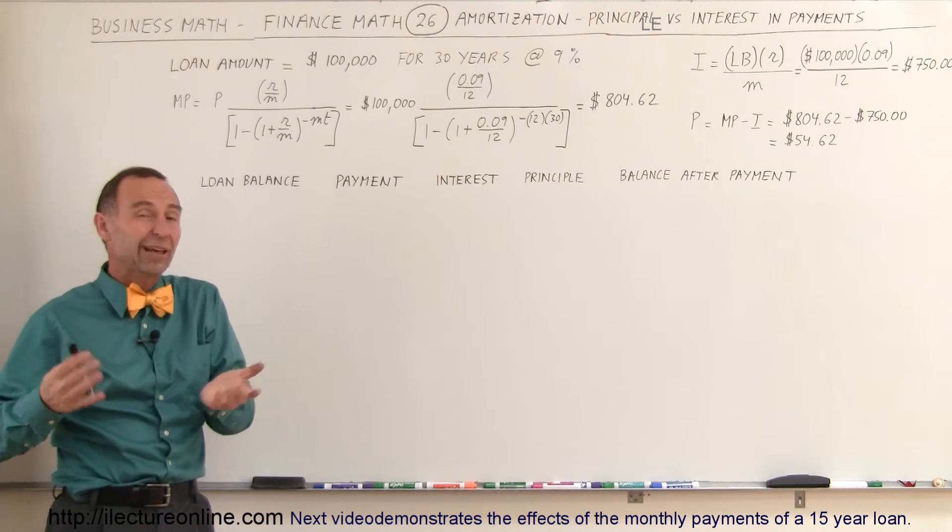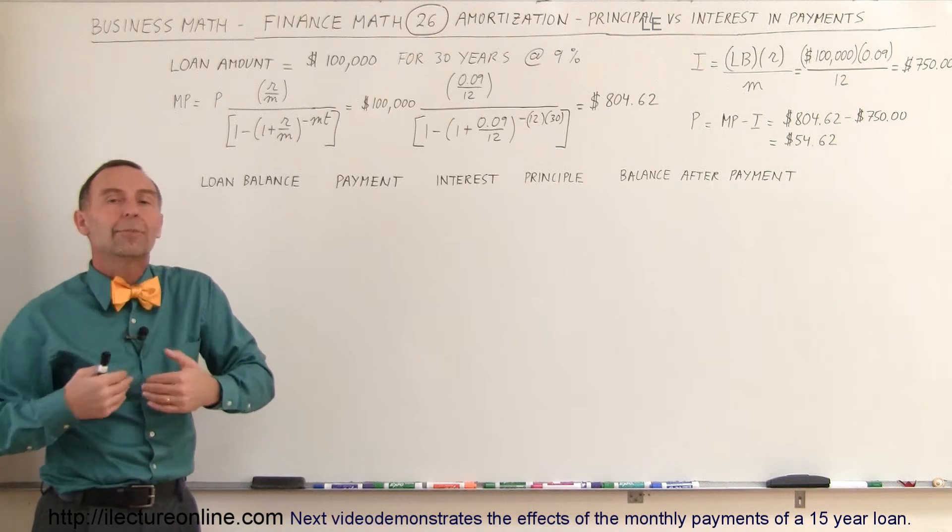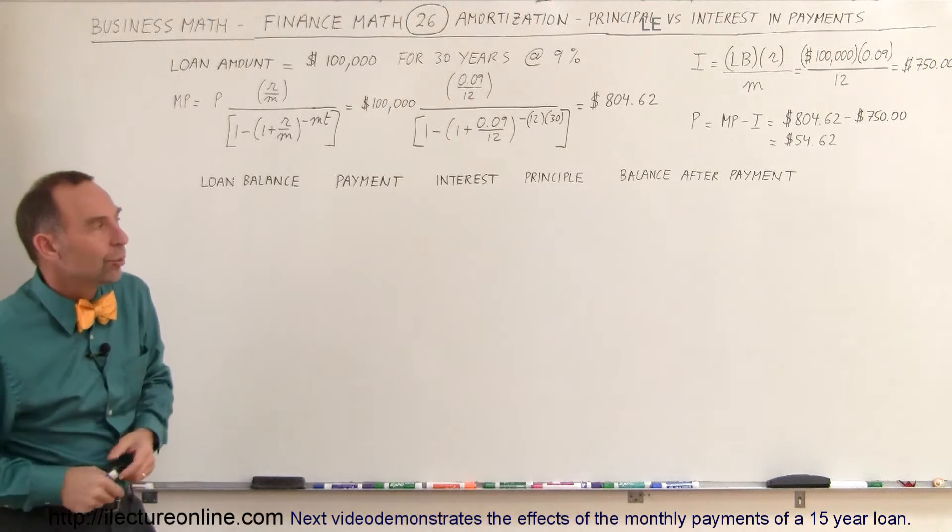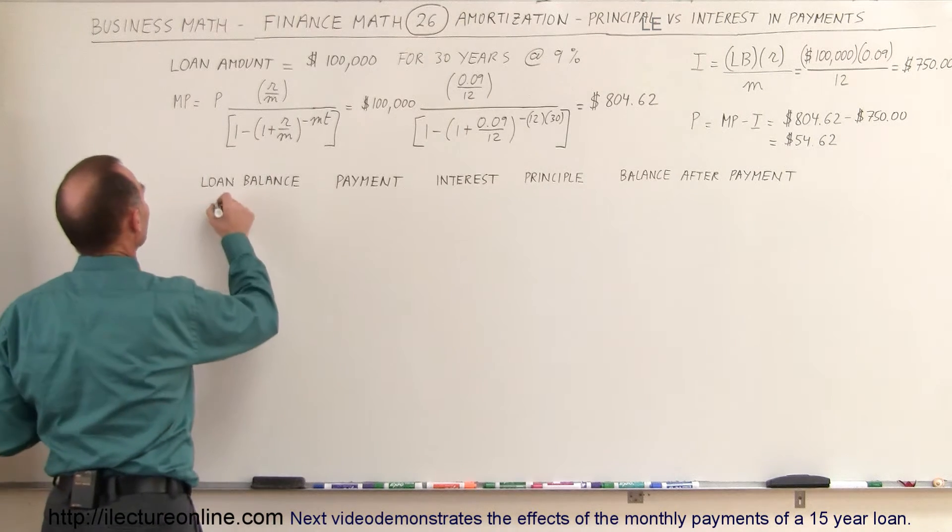So the question is, after one month, after two months, after three months, how much of our money has gone to principal and how much of it has gone to interest? So we're going to write down the loan balance, starting out with the loan balance of $100,000.